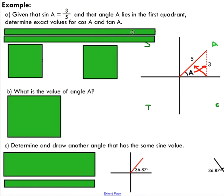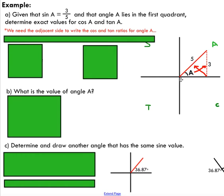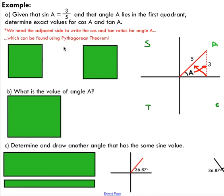However, in order to write cos and tan of that angle A, I need the adjacent side. You can try to write cos or tan of this angle right now — remember cos is adjacent over hypotenuse — but we're missing the adjacent side, so that's why we need to find it. And we do that by using the Pythagorean theorem. Remember, this is a right triangle, therefore we can use Pythagorean theorem to determine the adjacent side.